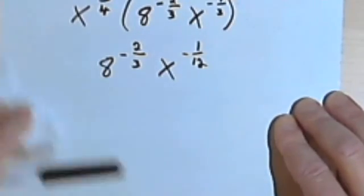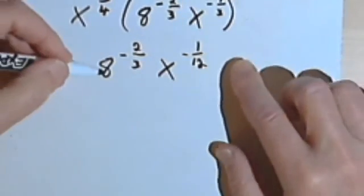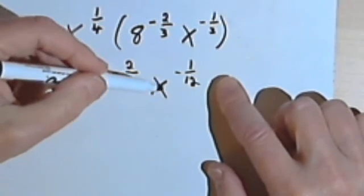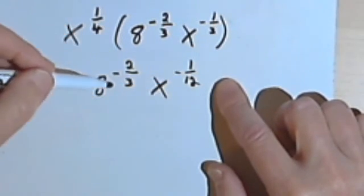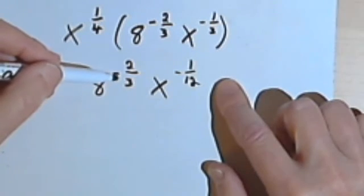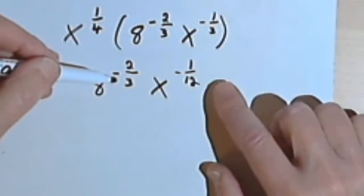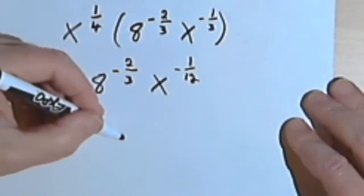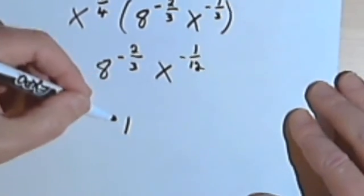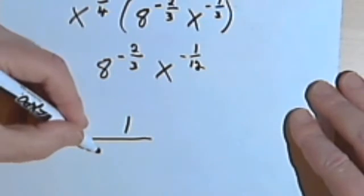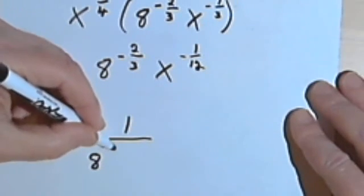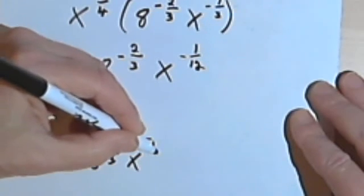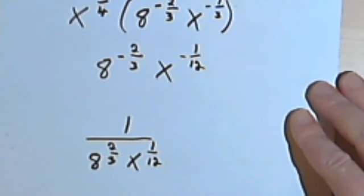So it's simplified quite a bit. I've got 8 to the negative two-thirds times x to the negative one-twelfth. Since both of these have negative exponents, I can move them to the denominator to make the exponents positive. So I'm going to make a fraction: 1 will be the whole numerator, and I'm going to have 8 to the two-thirds times x to the one-twelfth in the denominator.